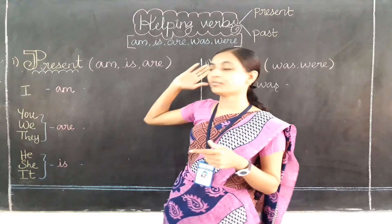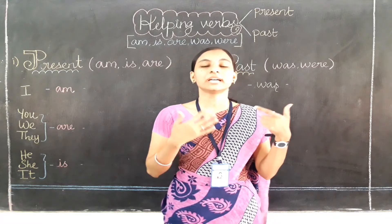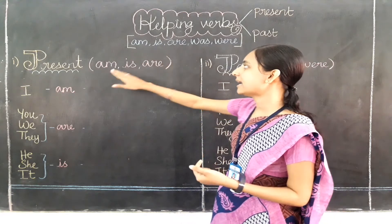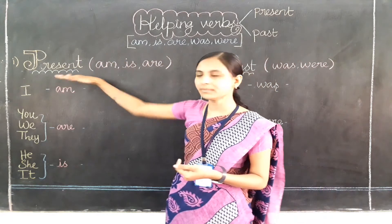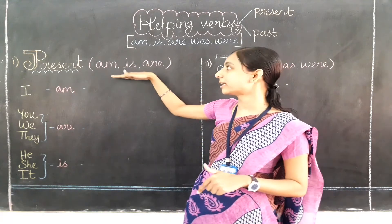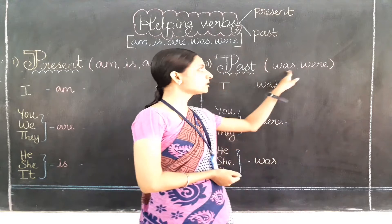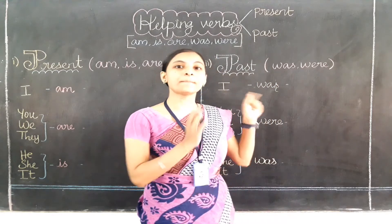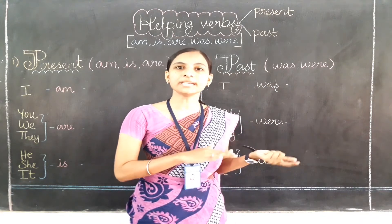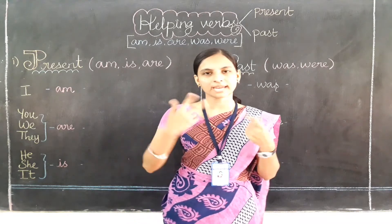From the five helping verbs, which ones tell the present time and which tell the past? Am, is, are represent the present time — whatever you are doing now, we use these helping words. Was and were are used to tell the past time, what has already been done.